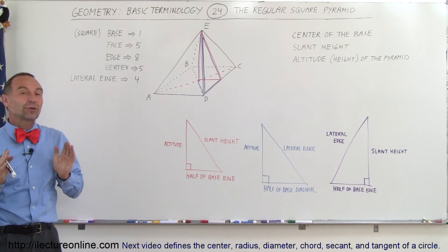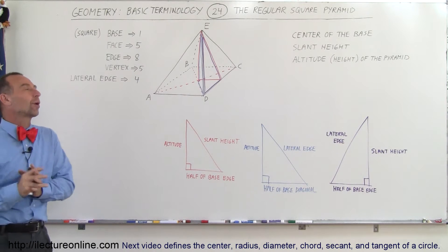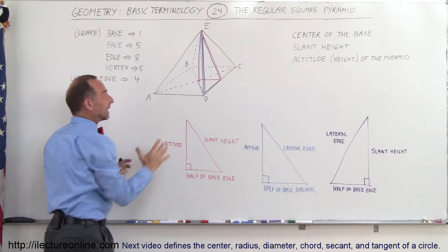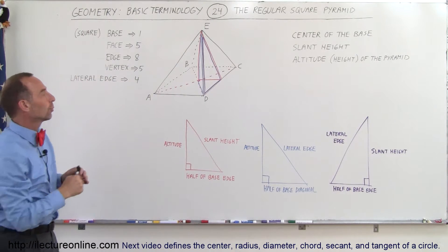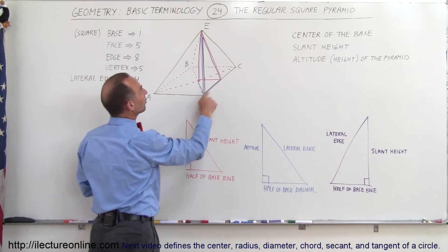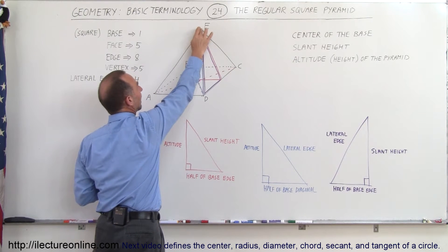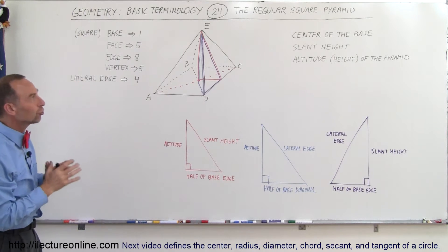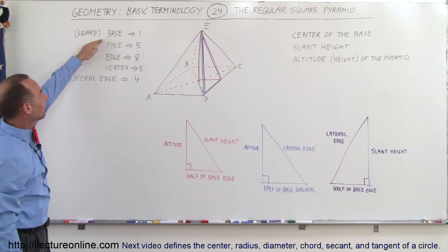Welcome to ElectroOnline. In this video we're going to talk about the square pyramid, or better yet the regular square pyramid, which means that here we have a pyramid whose base is a square and all four of the slanted sides are equal to one another. The vertex at the very top is directly situated over the very center of the base — that's what makes it a regular square pyramid.